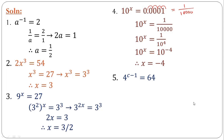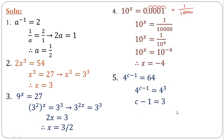For the fifth example, express the right-hand side in base 4. We can easily do that: 64 equals 4 raised to the power of 3. Since the bases are the same, the powers will be the same. So C minus 1 equals 3. Taking minus 1 to the other side, C equals 4.